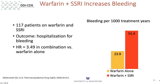This study done in Sweden looked at 117 patients on warfarin and SSRIs for atrial fibrillation. The outcome was severe bleeding resulting in hospitalization, and the hazard ratio was 3.49 with the combination versus warfarin alone. These patients all received either citalopram or sertraline. Looking at the graph on the right, bleeding per 1,000 treatment years with warfarin plus SSRI was roughly 50 — not a common event, but hospitalization for bleeding is obviously not a good thing.